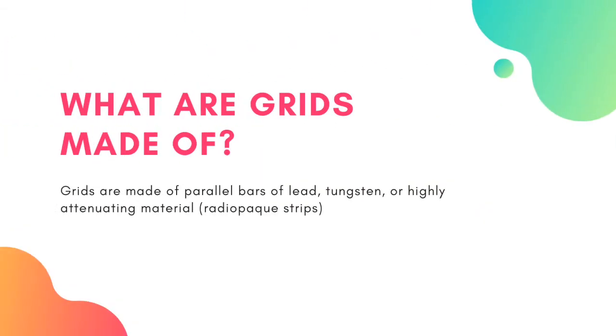What are grids made of? Grids are made of parallel bars of lead, tungsten, or highly attenuating material, interspaced with radiopaque strips.